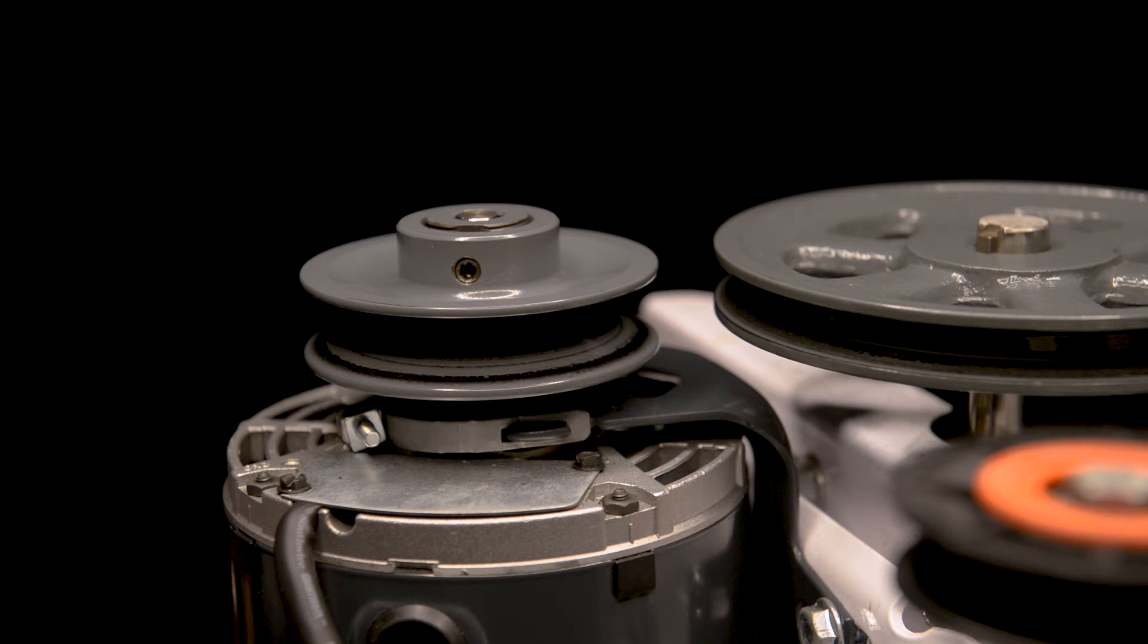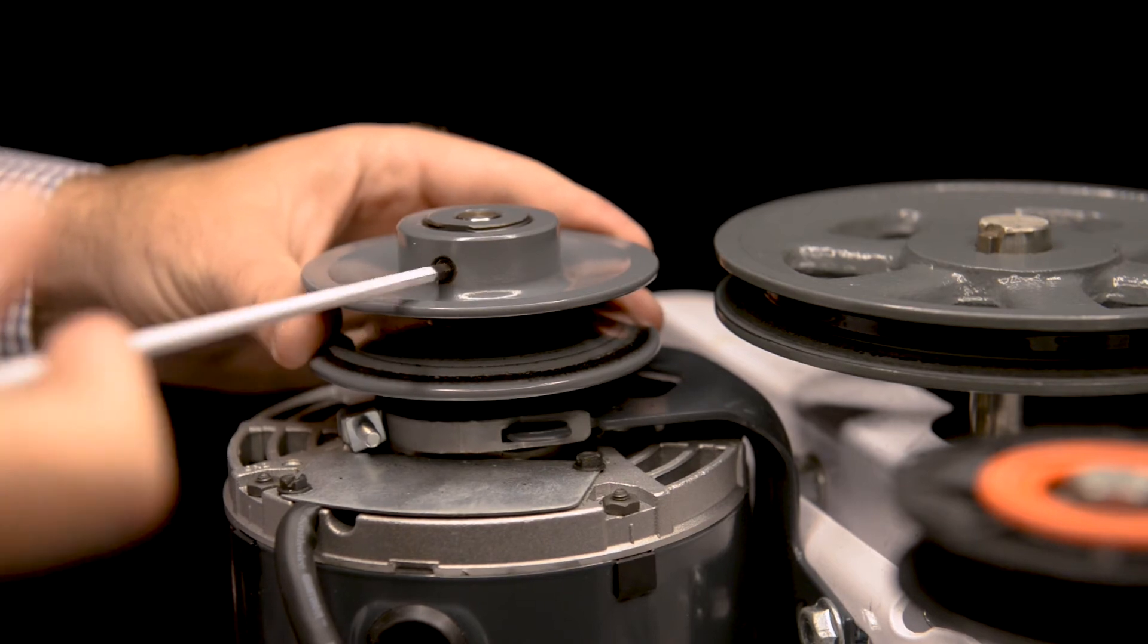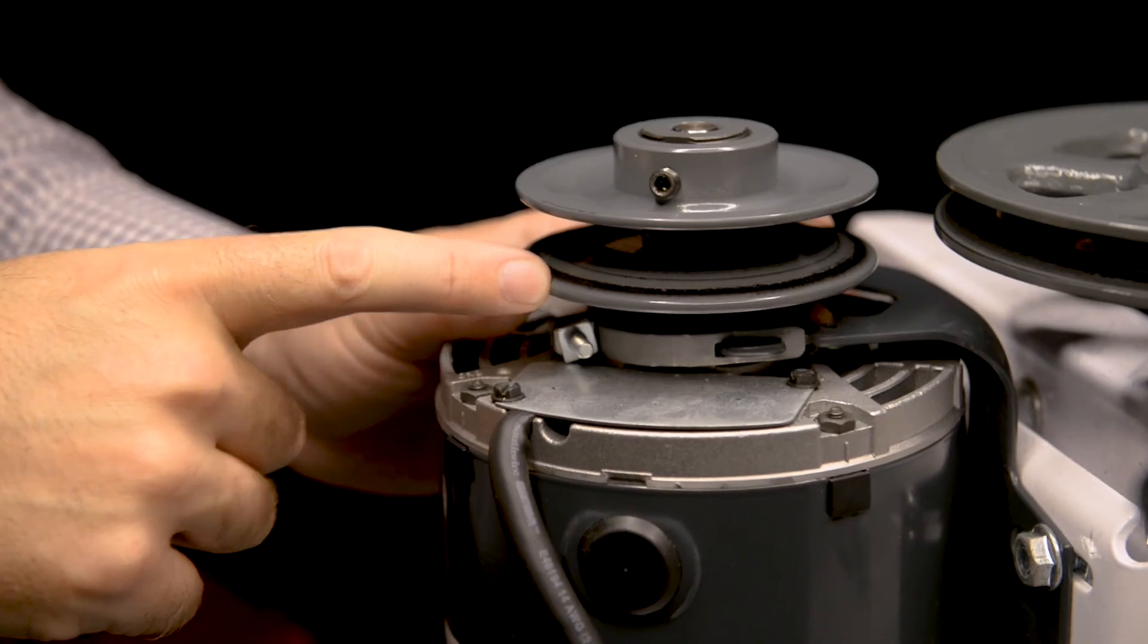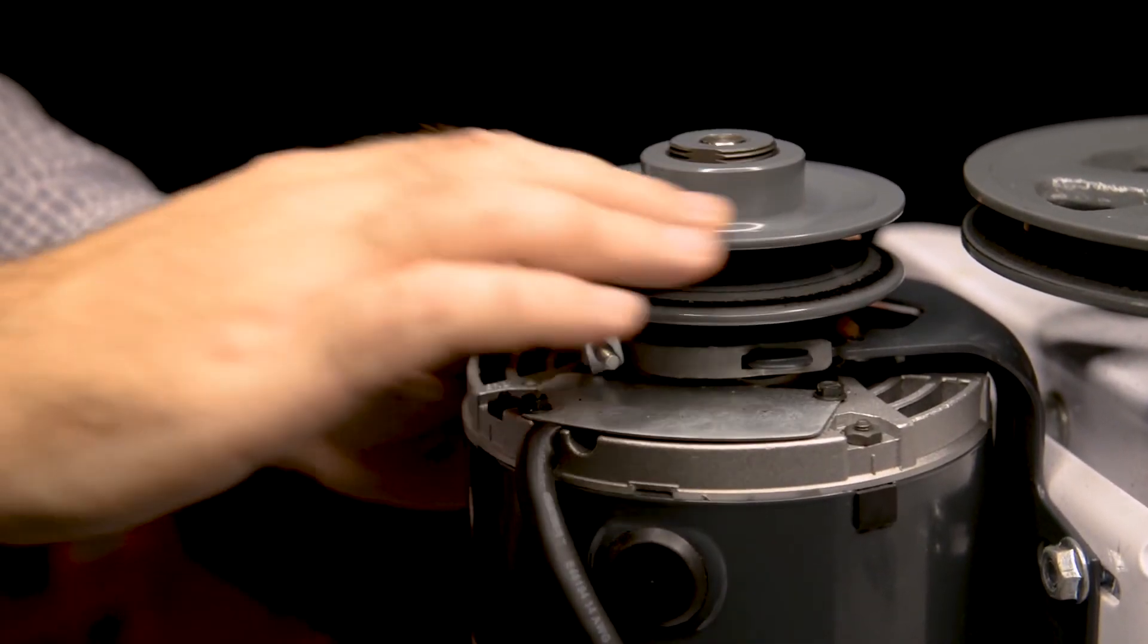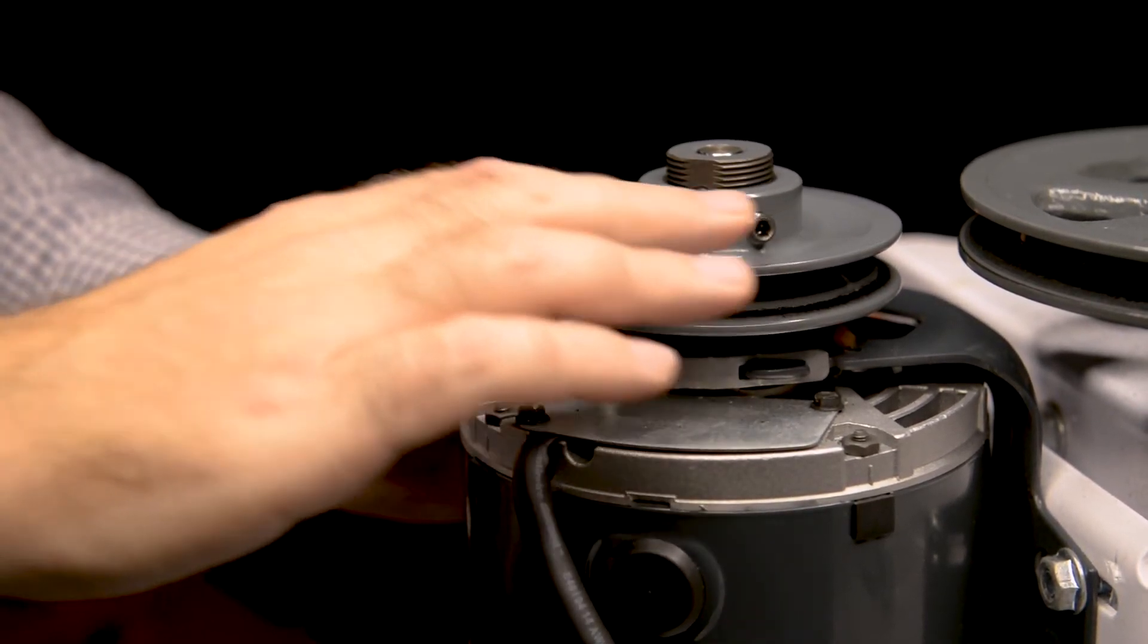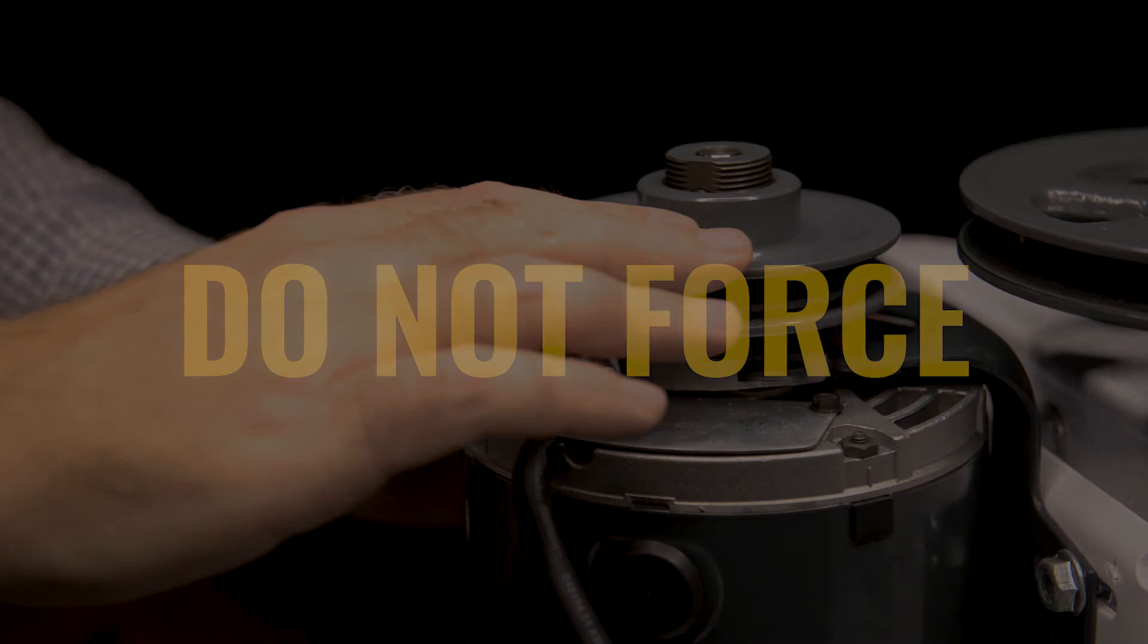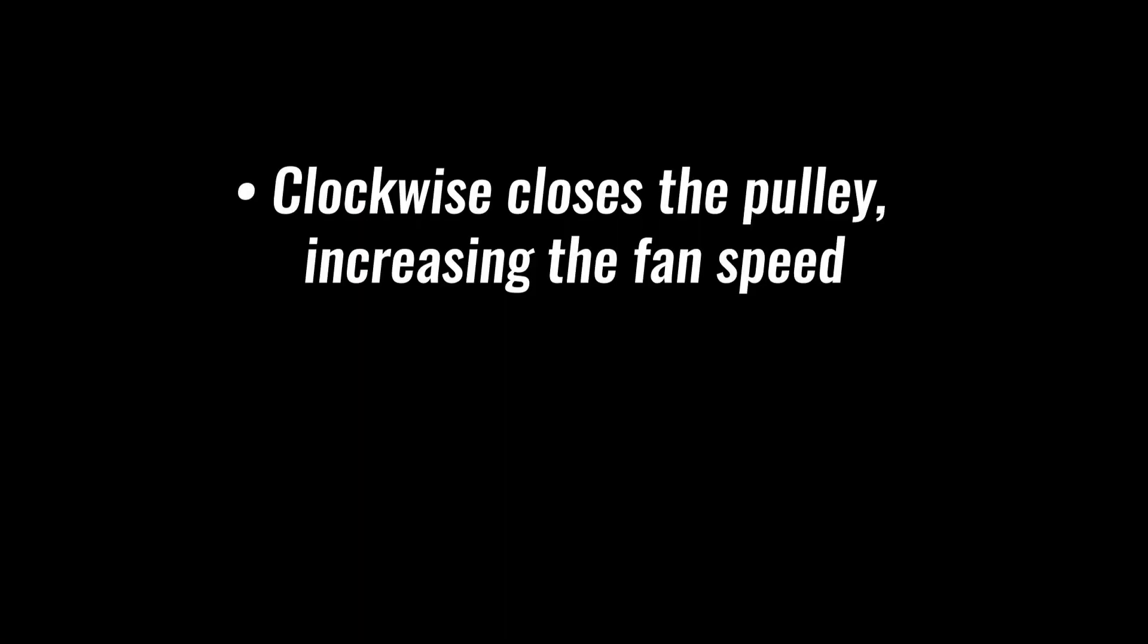To adjust the effective diameter of the pulley, locate the set screw on the top of the pulley. Using the correct size hex key or allen wrench, loosen but do not remove the set screw. To adjust the pulley, hold the bottom half of the pulley with one hand while turning the top half of the pulley. Do not force the pulley. If the top half of the pulley does not turn freely, then the sheave may be damaged and will need to be replaced.